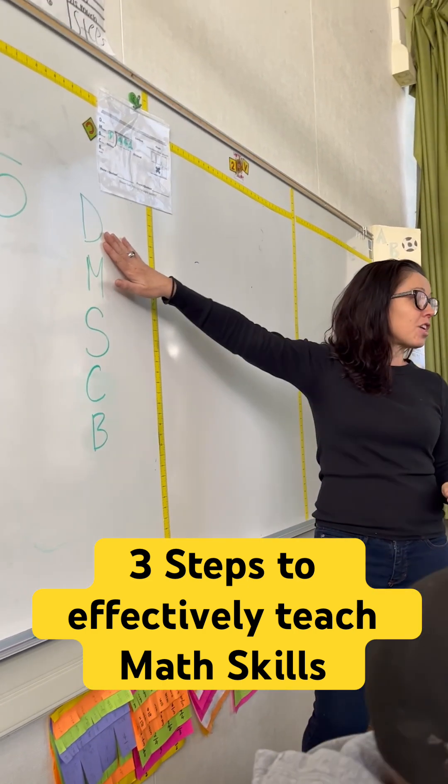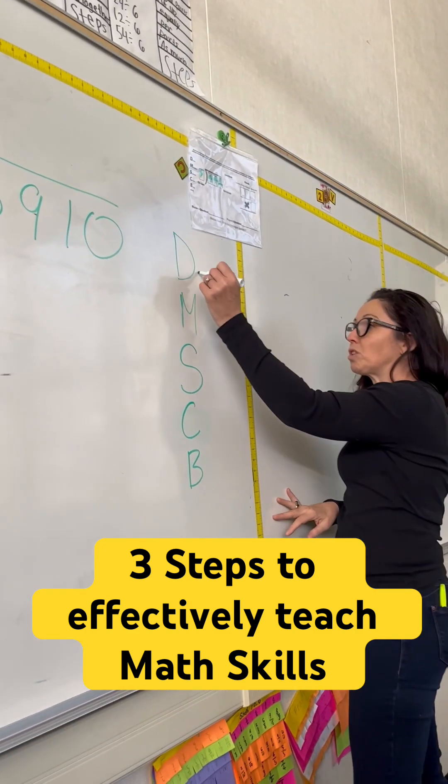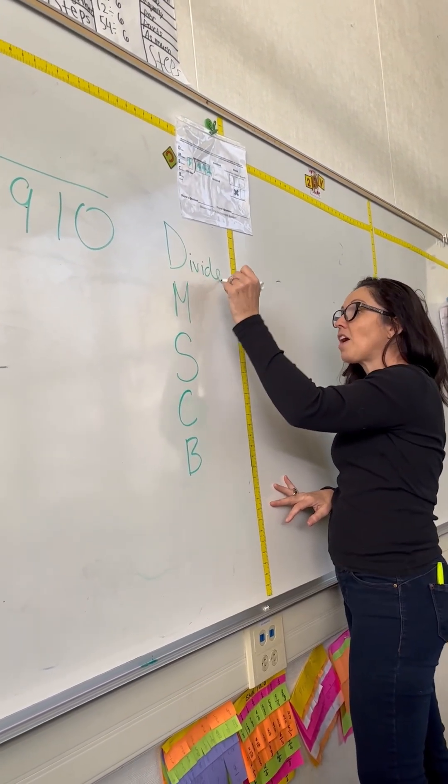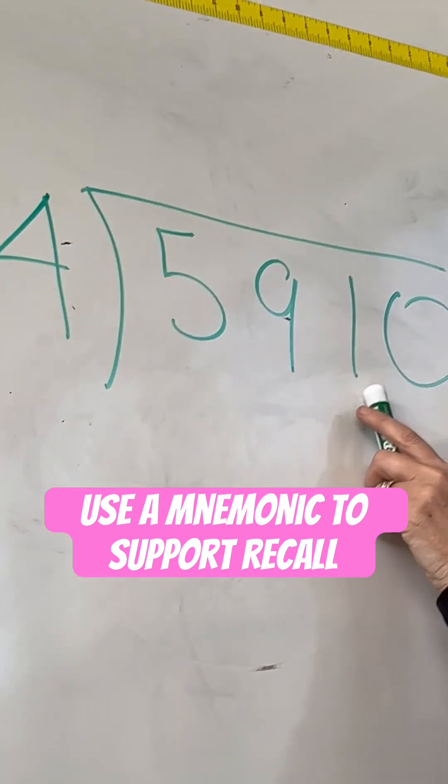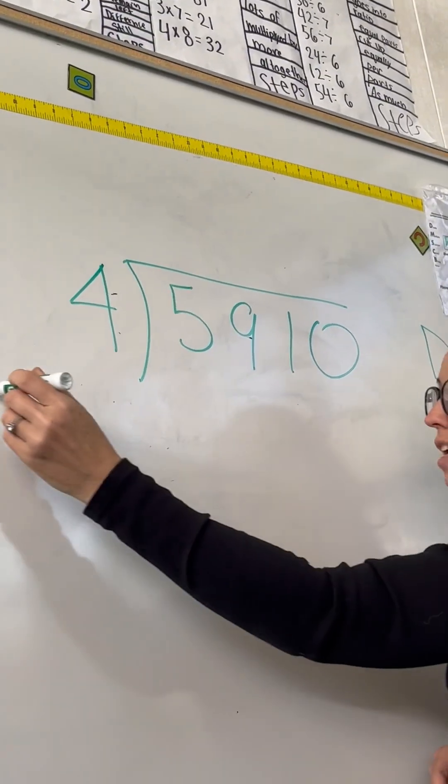So let's start with that first step, does, which we will divide. Here we go. We're dividing, okay? 5,910 divided by 4. Now...